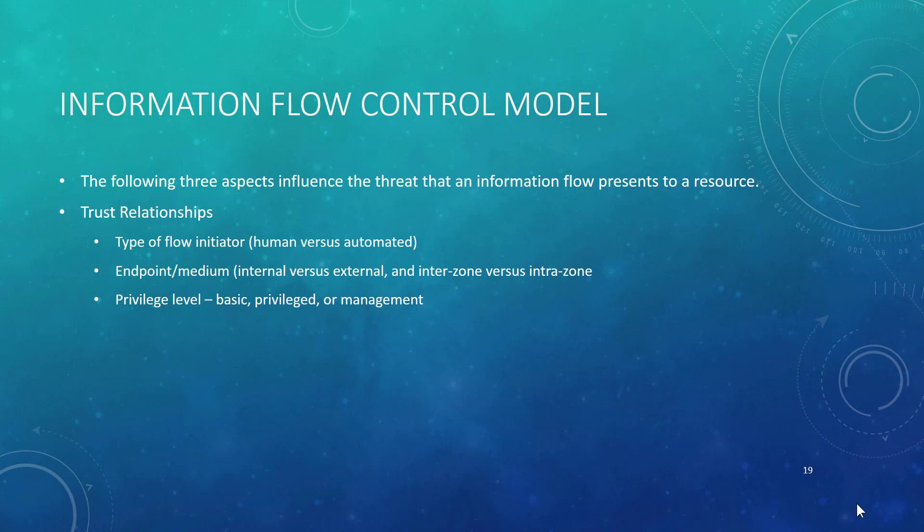Over the next couple of slides, we're going to talk about trust relationships and then talk about how that influences threat and thus influences risk as you're looking at an information control model. We're going to look at three things: the type of initiator and the threat associated with human versus automated initiator; the endpoint medium — internal versus external, or inter-zone versus intra-zone; and then privilege level — basic, privileged, or management.